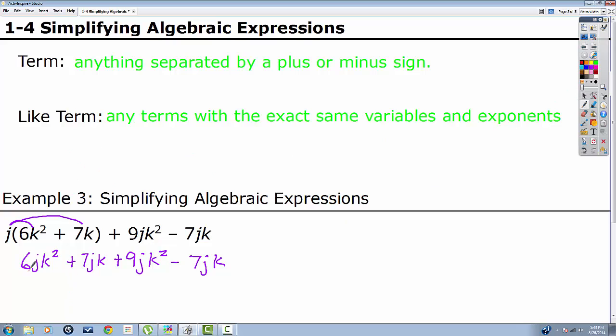Now we're looking for like terms. So j k squared. If there's something else that has a j k squared, it's a like term. The only thing that's allowed to be different is this thing in front. This is called a coefficient. So I'm looking for j k squared. There's one, and here's one. And the way you combine like terms is by adding the coefficients. 6 plus 9 is 15 j k squared.